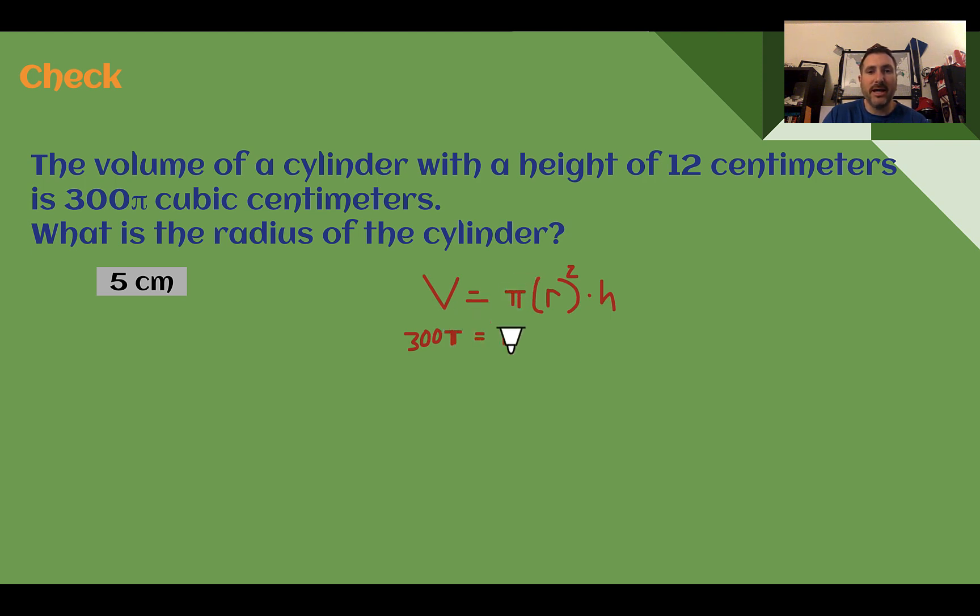That's going to equal to π times our height, which we know was 12, times radius squared.